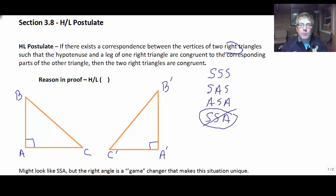and that's important, such that the hypotenuse and a leg of one right triangle are congruent to the corresponding parts of the other triangle, then the two right triangles are congruent.